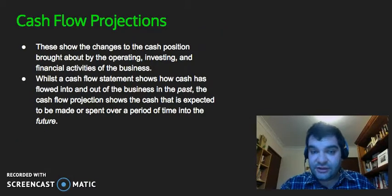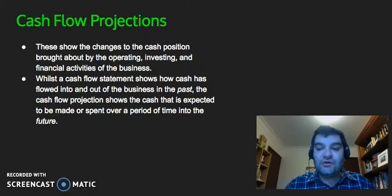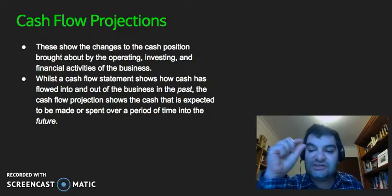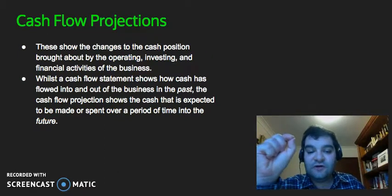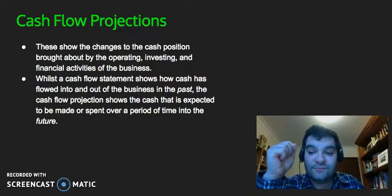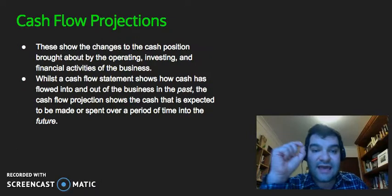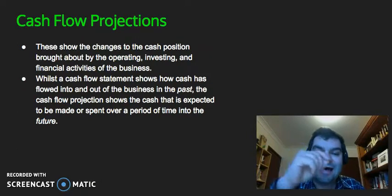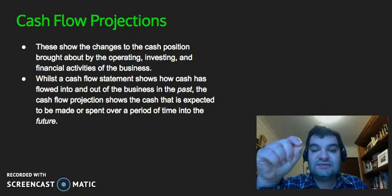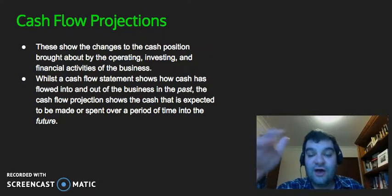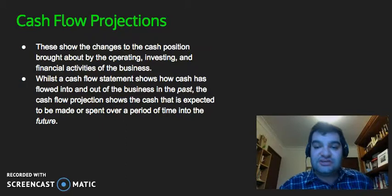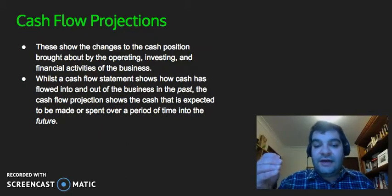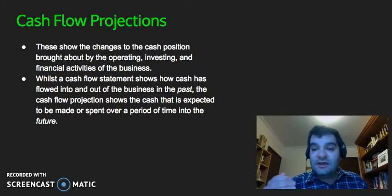Finally, in the forecasting toolkit, there is a cash flow projection. These show the changes to the cash position brought about by operating, investing, and financial activities of the business. An important distinction: while the cash flow statement — one of the three financial statements alongside the profit and loss statement and the balance sheet — shows how cash has flowed into and out of the business in the past, the cash flow projection shows the cash expected to be made or spent over a period of time in the future. Businesses can use past performance as an indicator, but the projection is essentially a prediction of how much cash will be coming in and going out going forward.